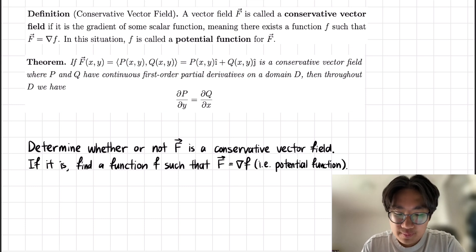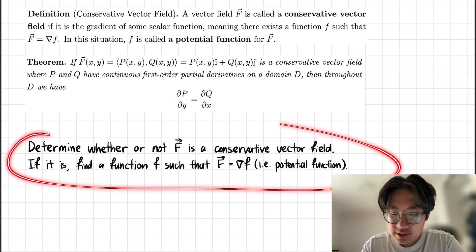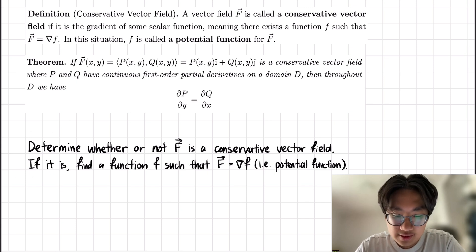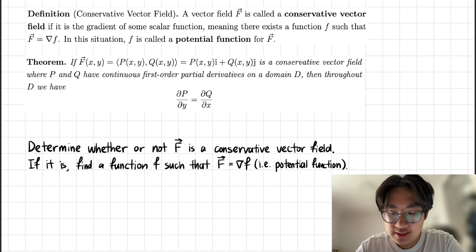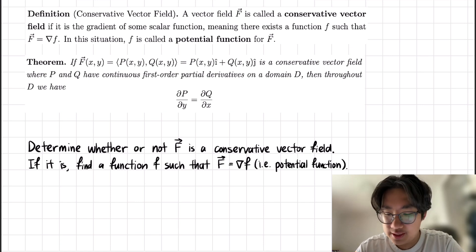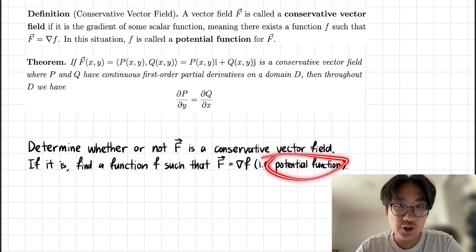The main question we're going to be dealing with is as follows: determine whether or not F is a conservative vector field. If it is, find a function f such that our vector field F is equal to del, or the gradient of little f, which is a potential function.